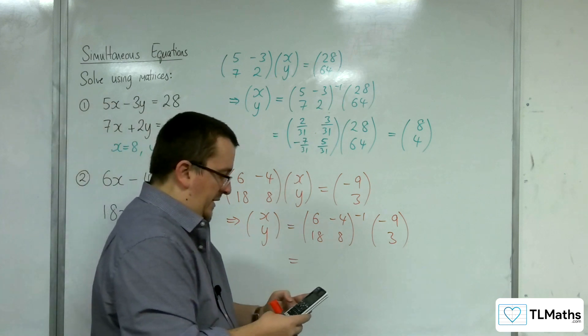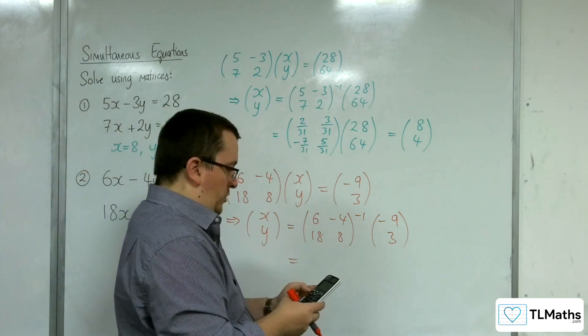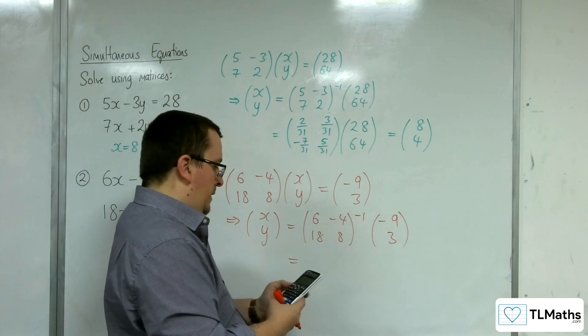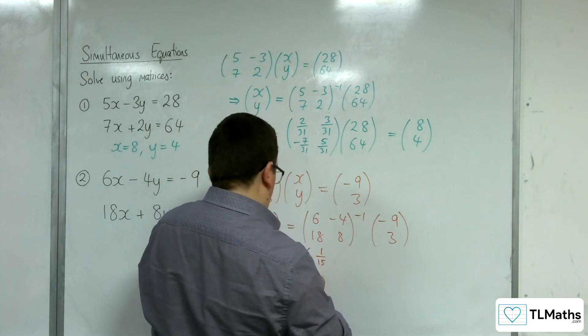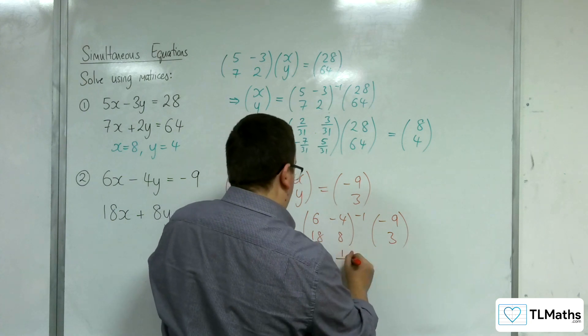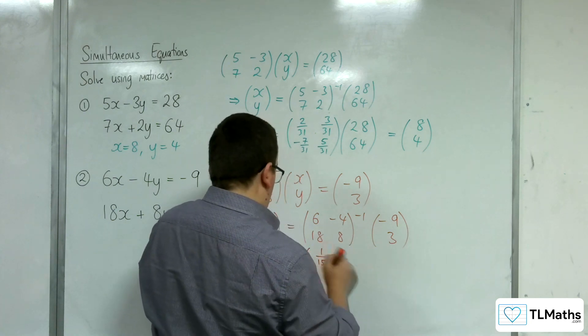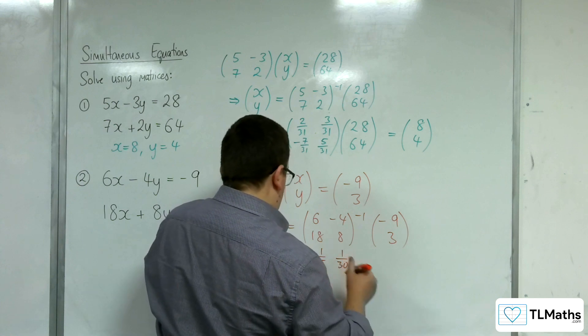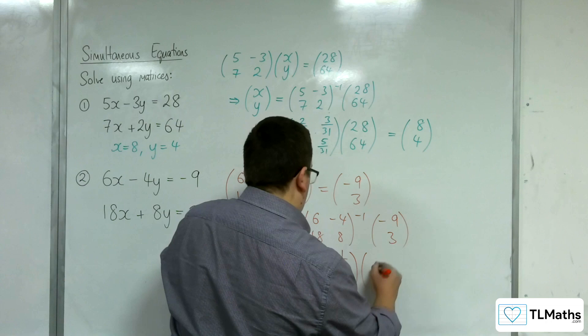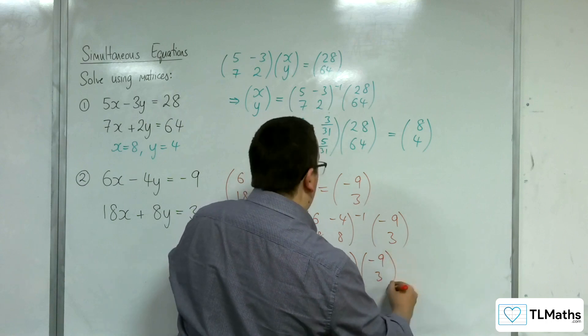Let's see what the inverse matrix actually is for that. We get 1/15, 1/30, -3/20, and 1/20. That's being applied to -9, 3.